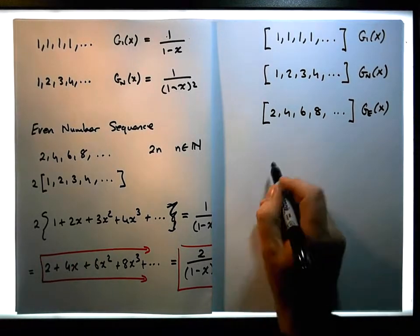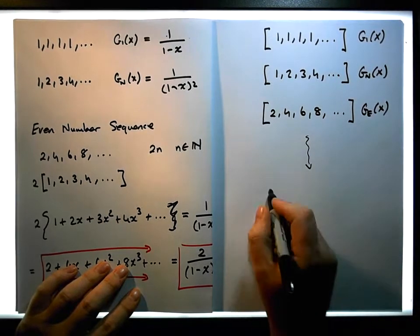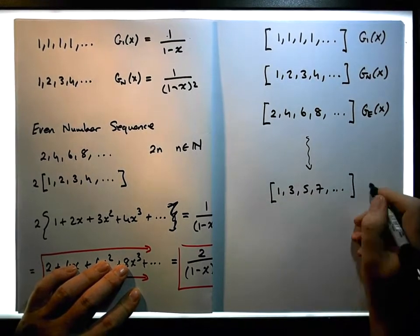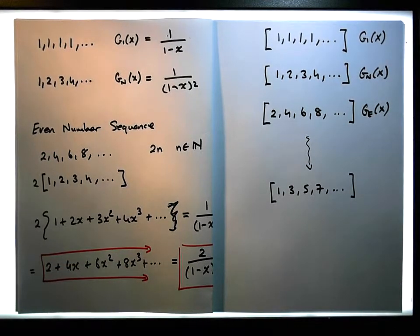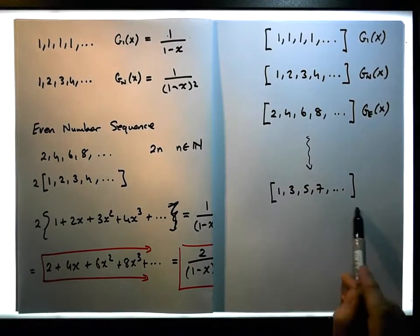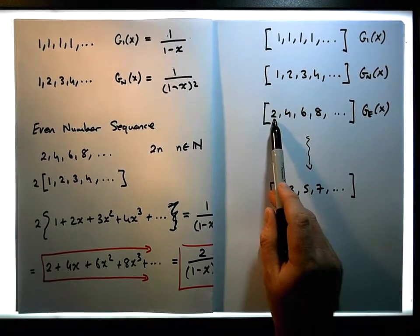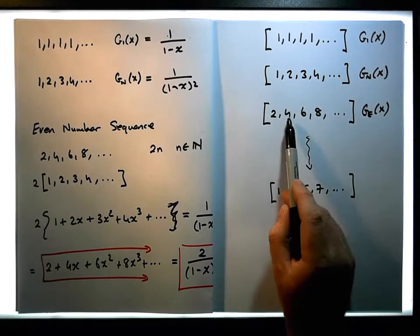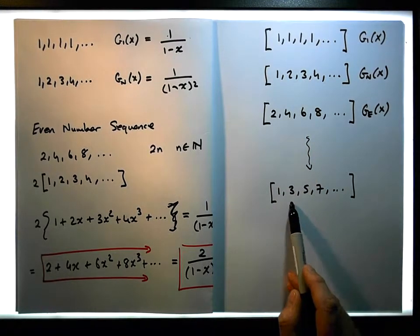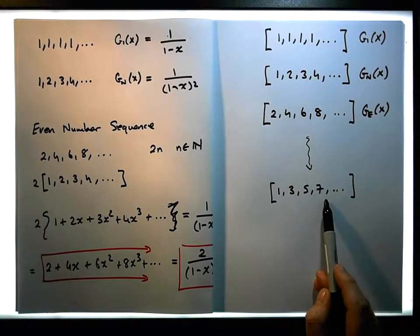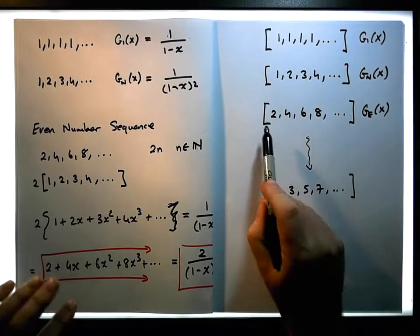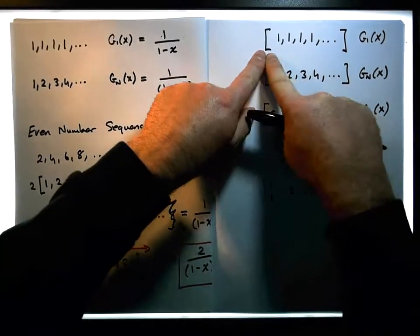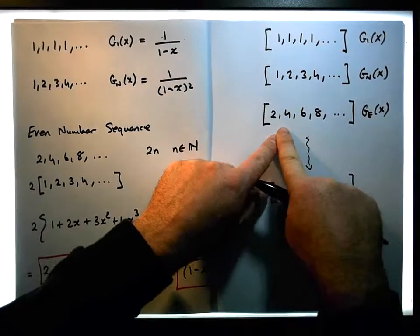So what we're interested in is getting the odd numbers. The odd numbers are 1, 3, 5, 7, and so on. How could we get the odd numbers? Well, the only difference between the even and odd numbers is that each term in the even sequence is one more than the corresponding term in the odd sequence. So if we reduce each even number by one, we'd end up with the odd numbers. We can do that by taking the constant sequence away from the even sequence term by term.